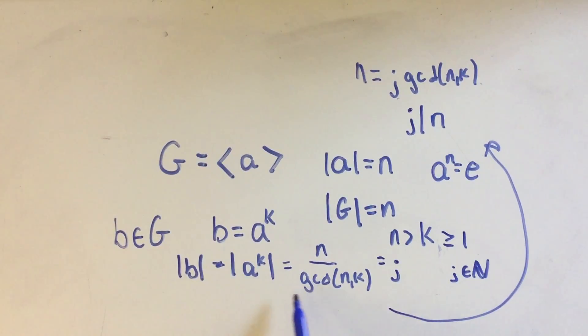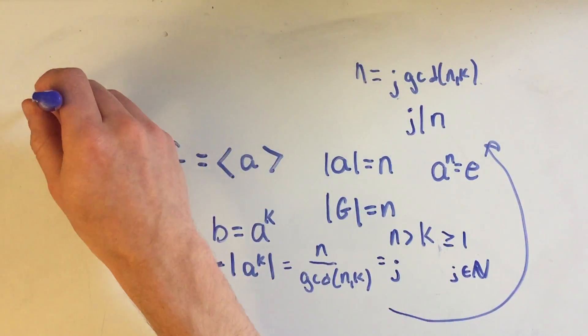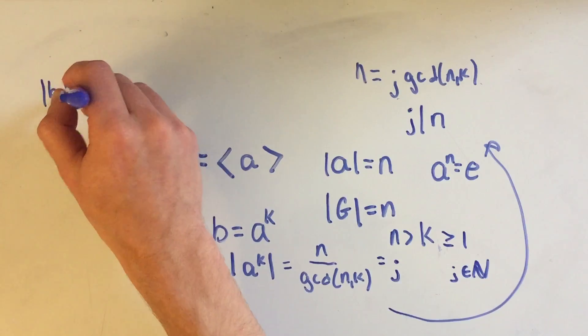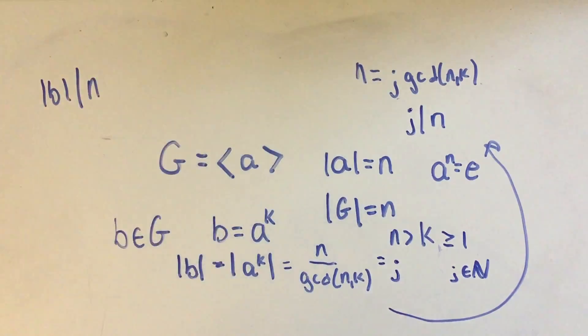Well, hey, if you look at this equation, the order of B was equal to J. So, what we have here, finally, is that J divides N, but J was the order of B, so the order of B divides N.